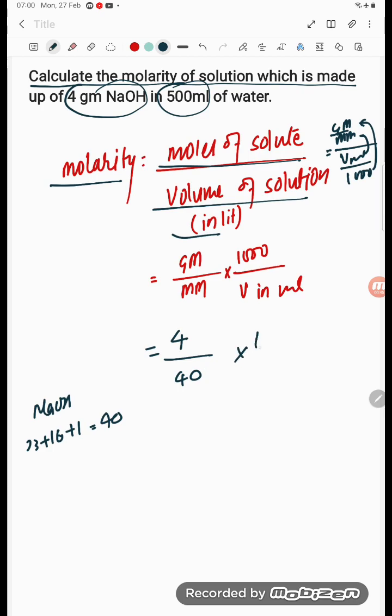So this is 40 multiplied by 1000 divided by 500. So this is 2 times student. This is 20 and 4, 5, 20. So it is 0.2 molar student. This is the answer.